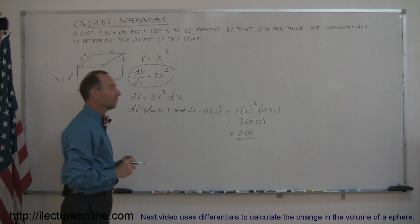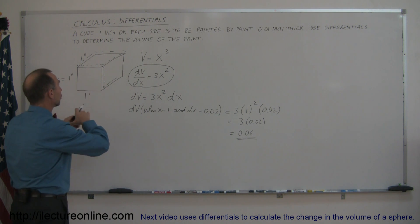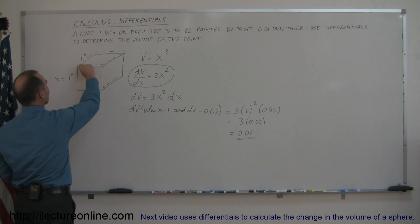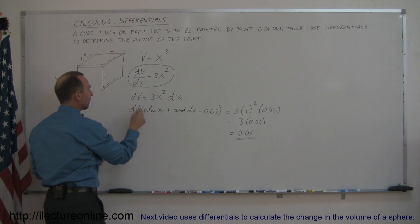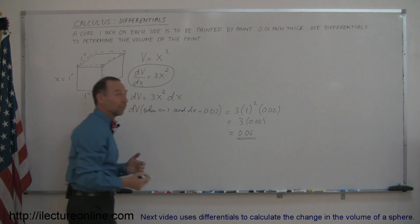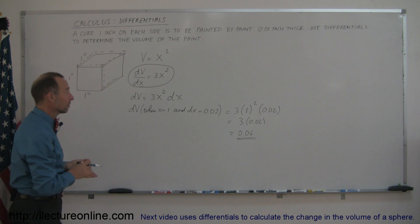So that means if I put a layer of paint on the cube, on the top and on the bottom, so that the x changes by 0.01 on top, I put it on the left and the right, I put it on the front and the back, then the amount of volume change is equal to this, which then represents the total volume of the paint.